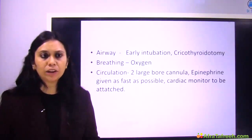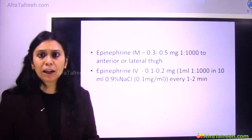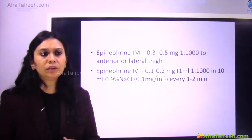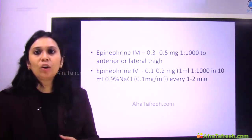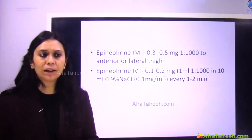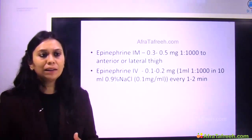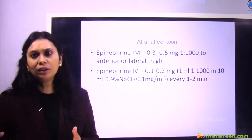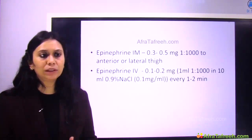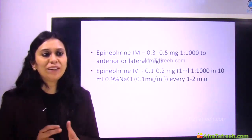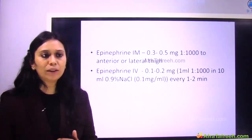Epinephrine is the drug of choice for anaphylaxis. For IM epinephrine (if IV access is not yet secured), the dose is 0.3 to 0.5 mg in 1:1000 dilution, given into the anterior or lateral thigh. For IV epinephrine, take 1 ml of 1:1000 and add 10 ml of 0.9% normal saline — this gives 0.1 mg/ml — and administer 0.1 to 0.2 mg every 1 to 2 minutes.